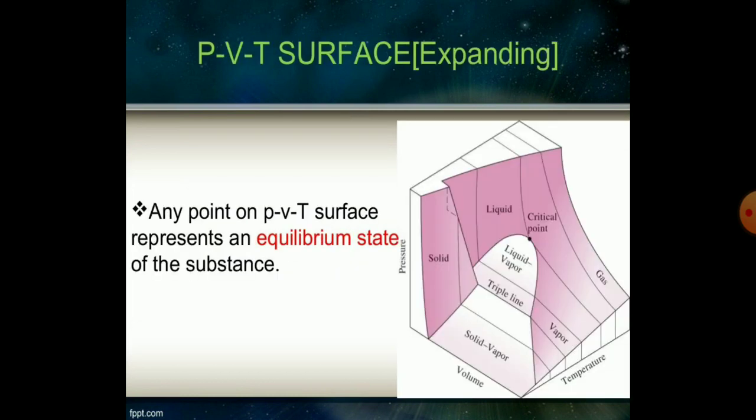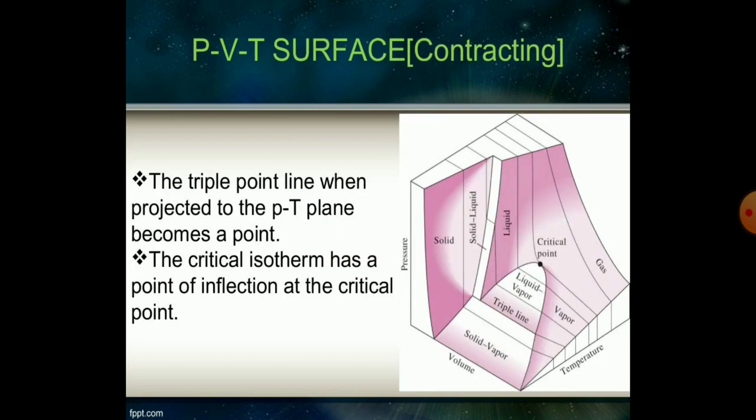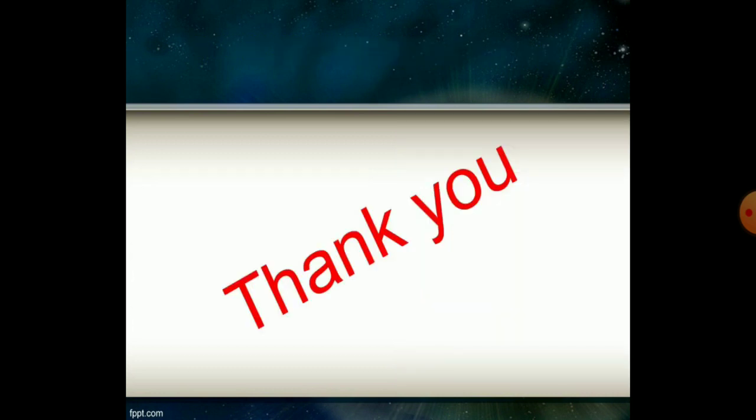Any point on the P-V-T diagram represents the equilibrium state of the substance. The triple point line, when projected to the P-T plane, becomes a point. The critical isotherm has a point of inflection at the critical point. This is all about the basic phase change of water from the substance which is in purest form. Thank you friends, thank you very much.